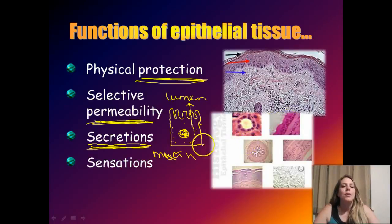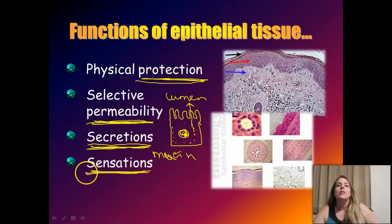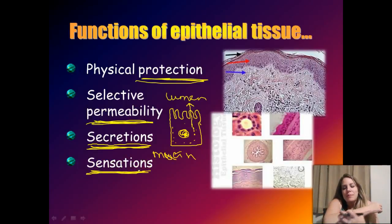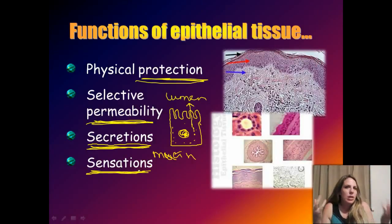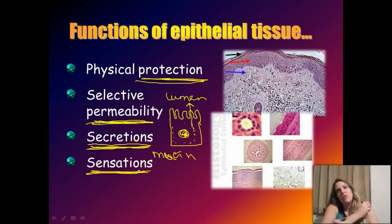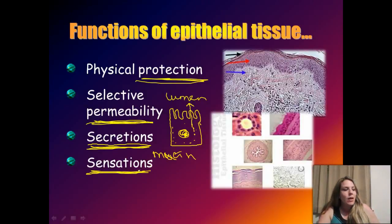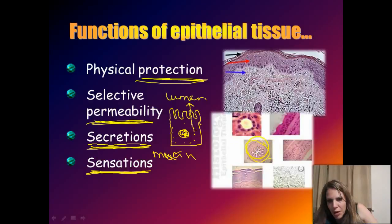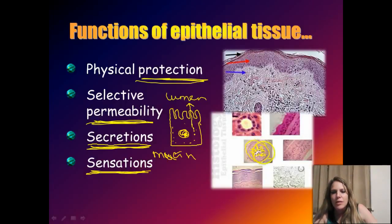So epithelial tissue serves for protection, allows good things in and keeps bad things out, and has secretory functions. Epithelial cells also have sensations — think of your skin. You have epithelial tissues that can register what's going on in the environment; they're tied into the nervous system and can determine if something feels good or bad, like when epithelial cells hit a hot stove.